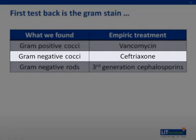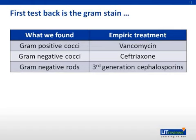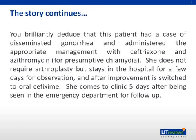We send our battery of tests and the first one back is our gram stain, which will help us direct antibiotic therapy as shown in this chart. The gram stain shows gram-negative cocci consistent with our suspicions for Neisseria gonorrhea. In this case, prompt initiation of ceftriaxone is appropriate, as well as azithromycin for presumptive concurrent chlamydial infection. In very ill patients, there may not be time to wait for test results — an antibiotic should be administered as soon as possible. Our patient was diagnosed with disseminated gonorrhea and treated with ceftriaxone and azithromycin. She did not require arthroplasty but stayed in the hospital for a few days and after improvement was switched to oral cefixime. She comes to clinic five days later for follow-up.